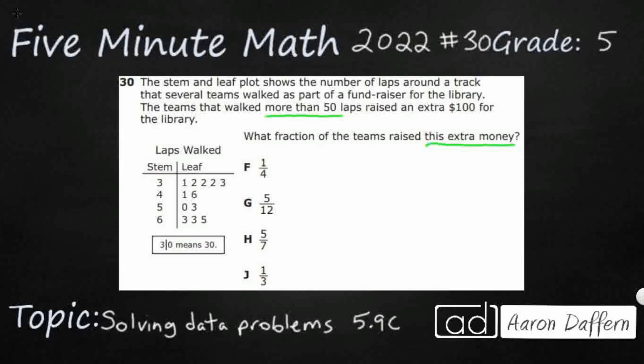This extra money refers to this extra $100. Who got that $100? Those that walked more than 50. So we can put a greater than 50. And our answer needs to be in the form of a fraction.